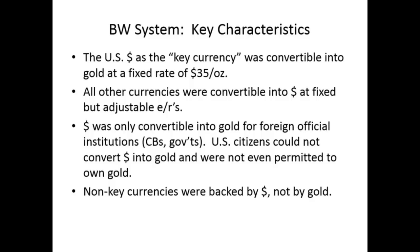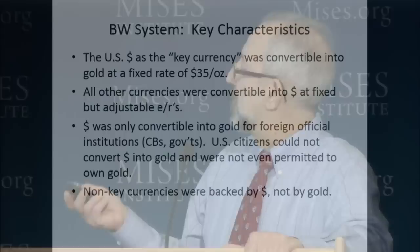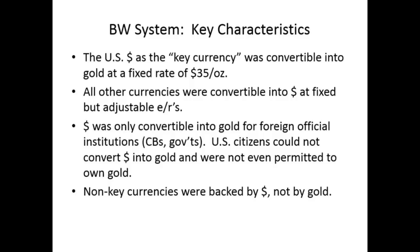The only agencies that could convert dollars into gold were foreign official institutions — central banks and governments. U.S. citizens were not permitted to own gold until 1976. If you were a licensed jeweler or dentist, you could get gold only for purposes related to your work. The other currencies — like the pound and the German mark — were not key currencies; they were backed by dollars. They held dollars instead of gold to back up their currencies. This is a very pernicious system that is self-contradictory and will lead to its own collapse.